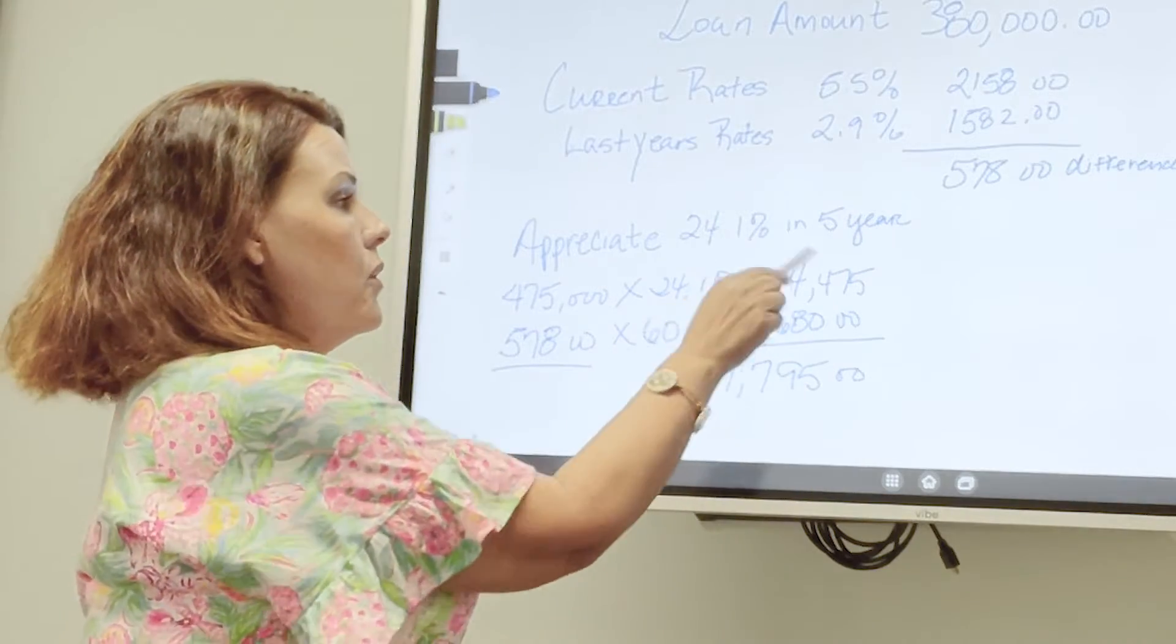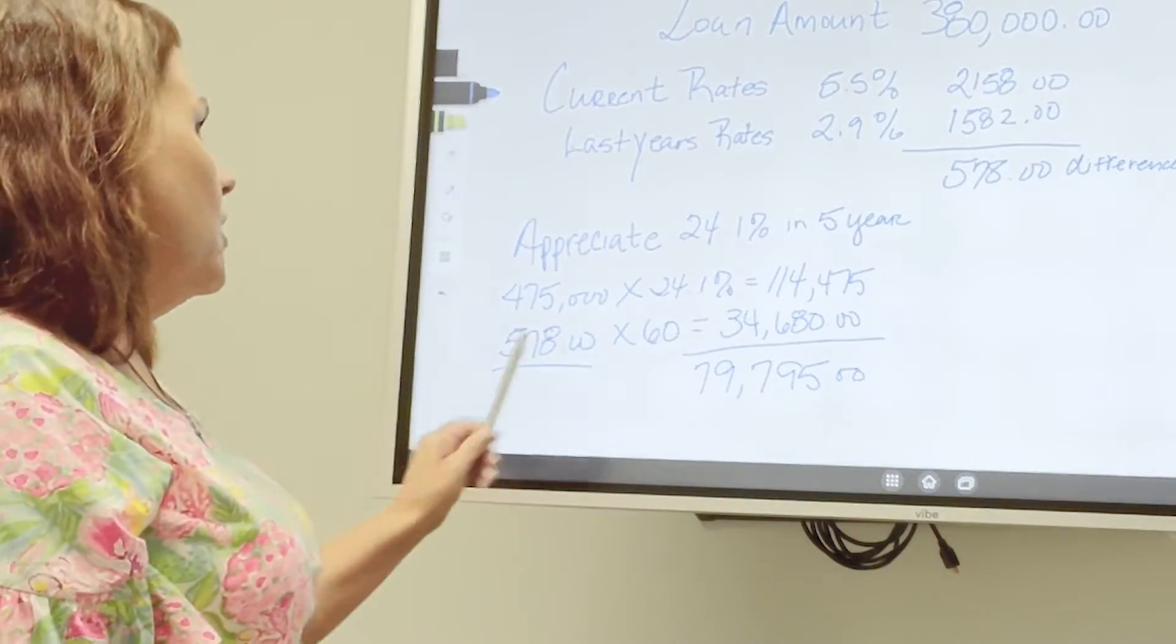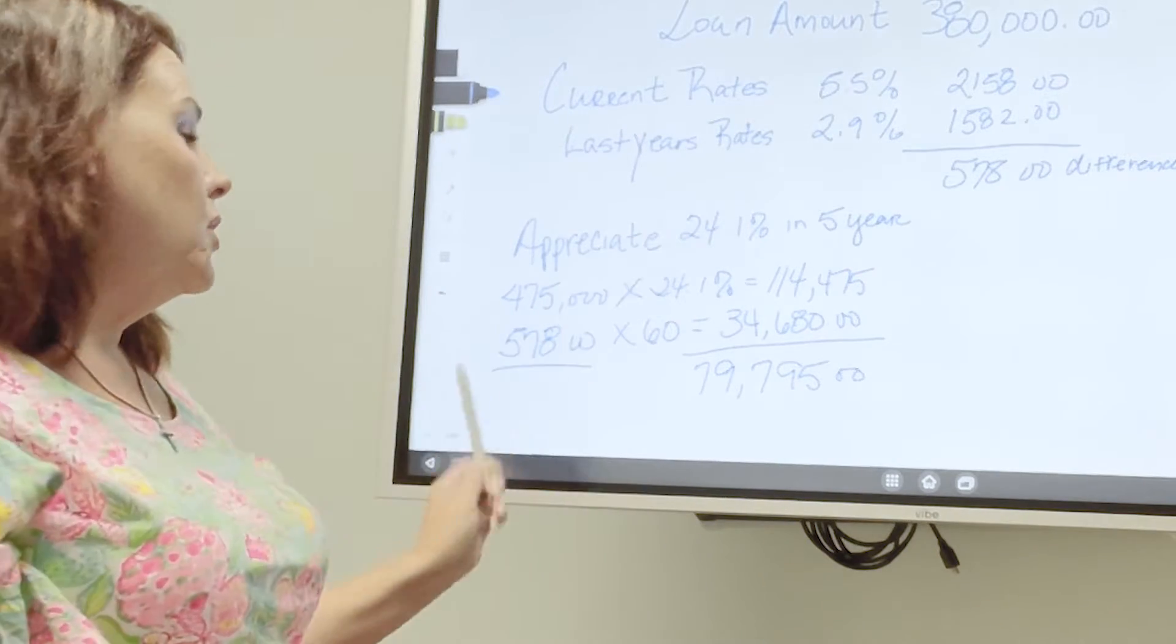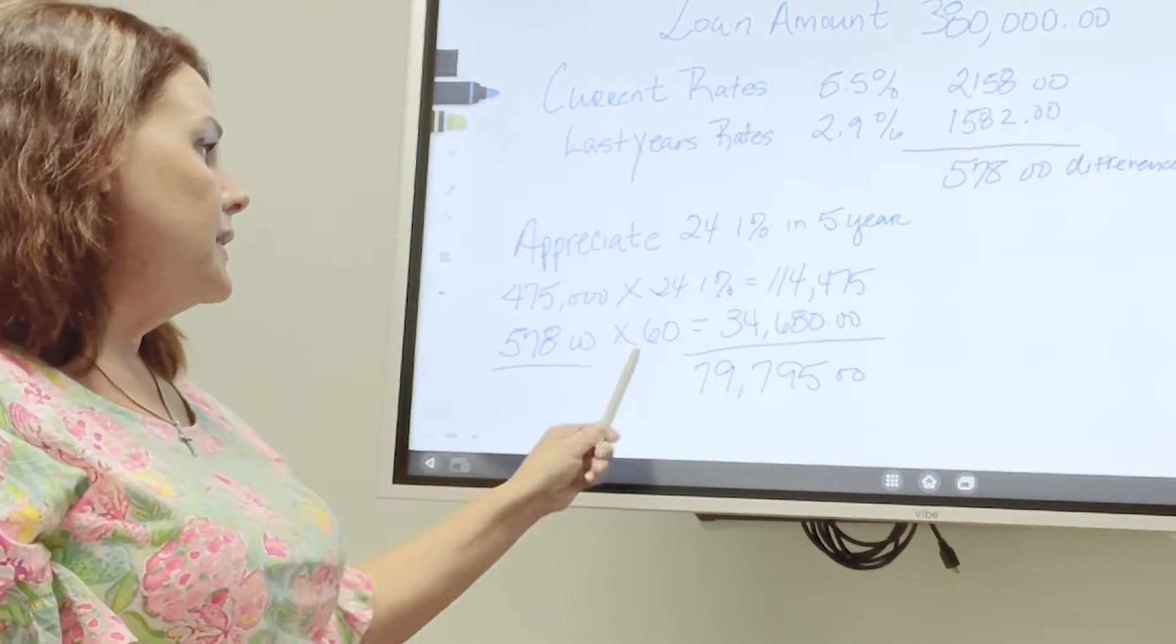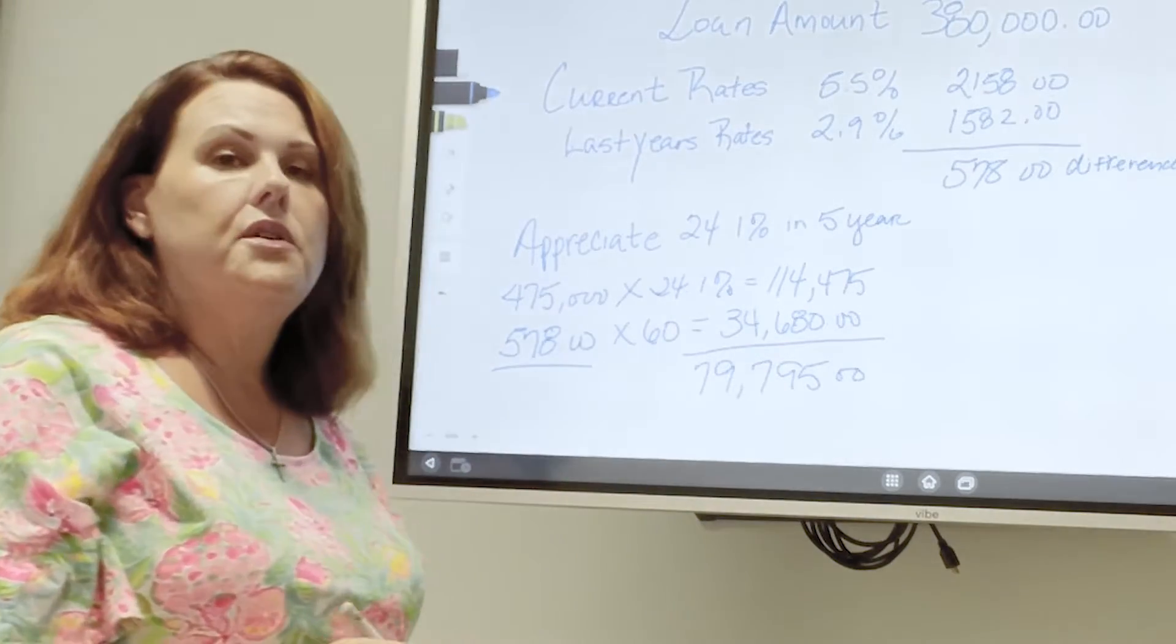That leaves you with $114,475. I went back and took the additional payment increase and I multiplied it by 60 months which was just 5 years and that's going to cost you $34,680.